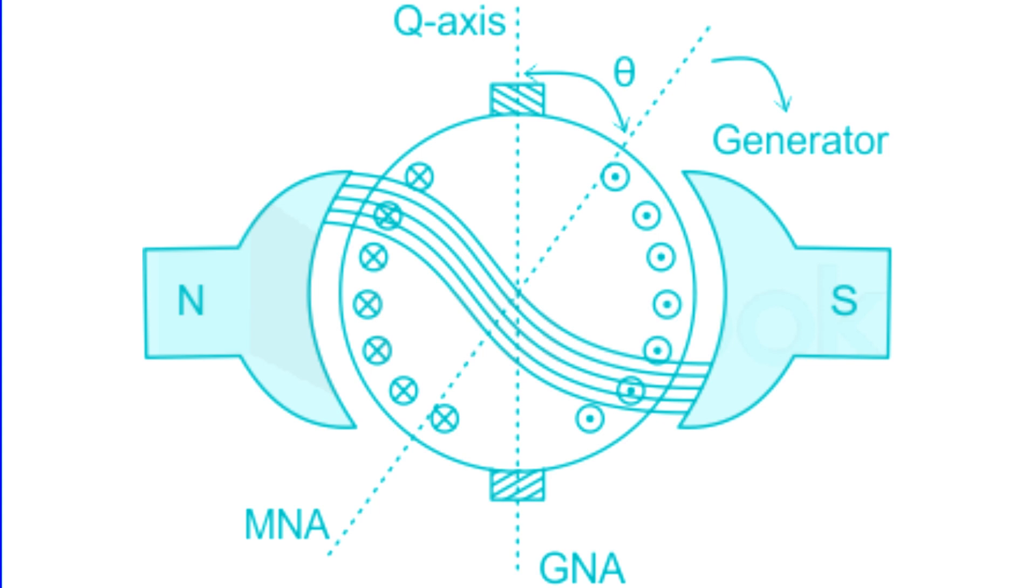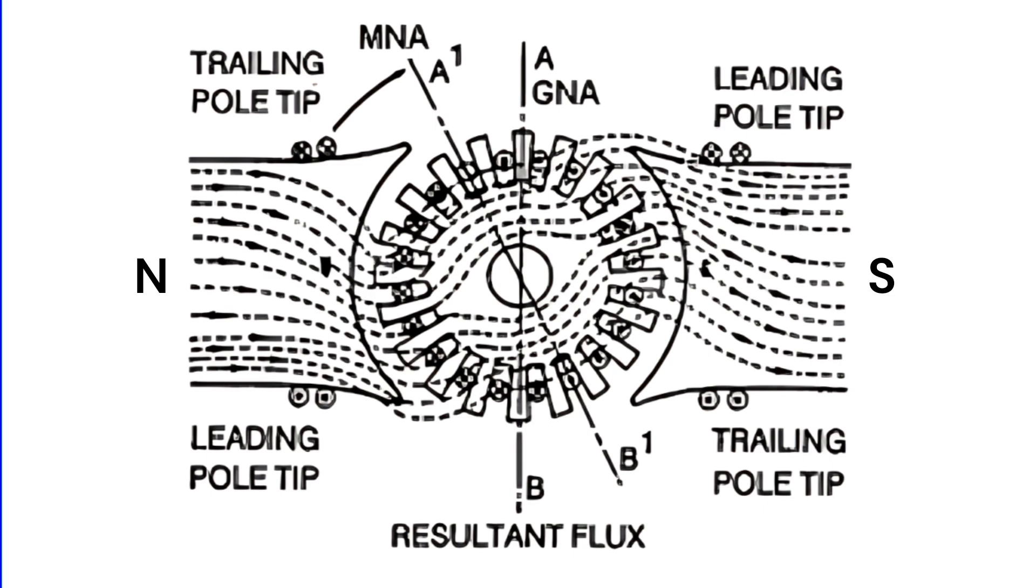Armature reaction refers to the influence of the armature flux on the main flux. For a DC motor, this reaction strengthens the flux at the leading pole while weakening it at the trailing pole. The leading pole tip is defined as the point where armature conductors first come under influence, whereas the trailing tip is situated on the opposite side.